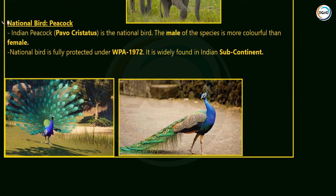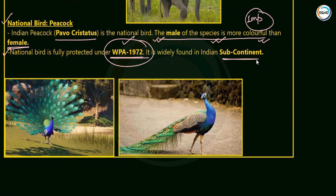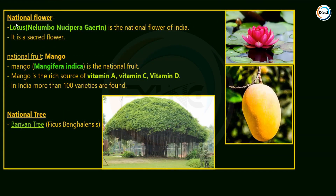The National Bird is the peacock. Its scientific name is Pavo cristatus. The male of the species is more colorful than the female — this is an important exam fact. The peacock is also fully protected under the Wildlife Protection Act 1972 and is widely found in the subcontinent.